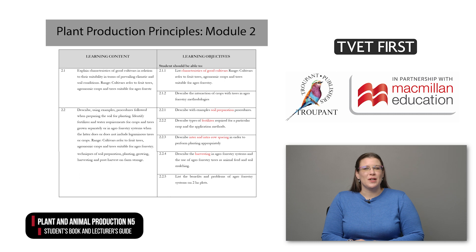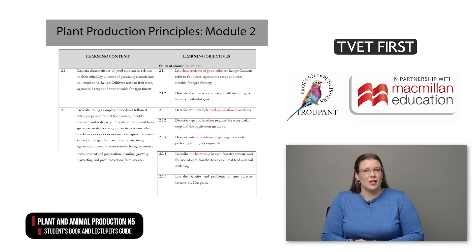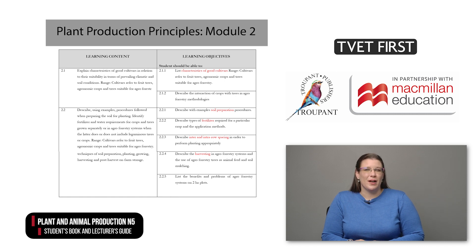Module 2 covers plant production principles. The content is specified in 23 learning objectives. Students start by learning about the characteristics of good cultivars. The range of cultivars includes fruit trees, agronomic crops, and trees suitable for agroforestry. The module also covers a broad spectrum of relevant practical information such as soil preparation, fertilizers, row spacing, irrigation, and harvesting.